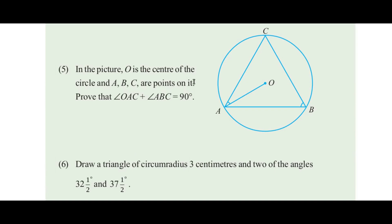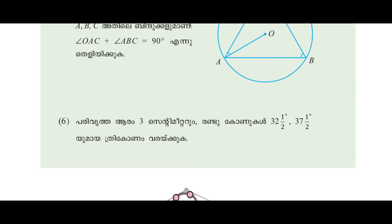In this picture, O is the center of the circle and A, B, C are points on it. Prove that angle OAC plus angle ABC is equal to 90 degrees.